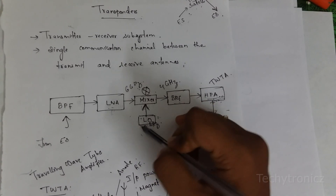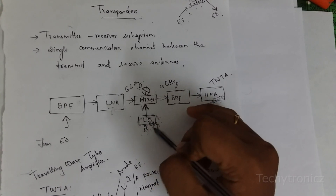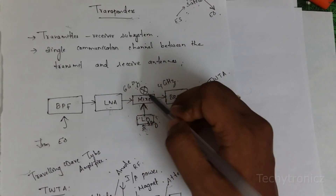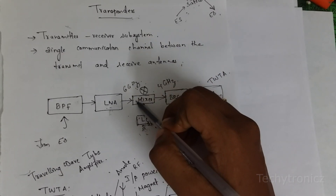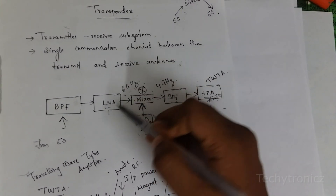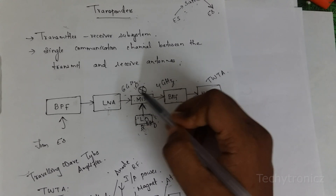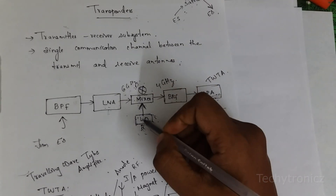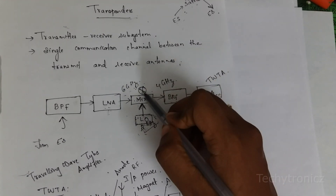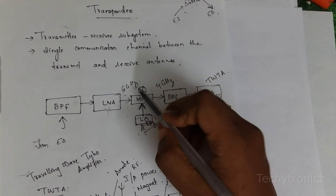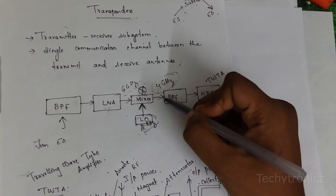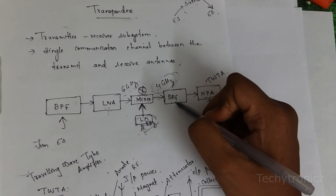What is the purpose of the mixer? A local oscillator is connected to the mixer. This mixer down-converts the signal which comes from the low noise amplifier. For example, if 6 GHz is given to the mixer and we are connecting with a local oscillator of 2 GHz, this mixer will down-convert the frequency — that is, 6 minus 2 — it will produce the signal as 4 GHz and give it to the bandpass filter.